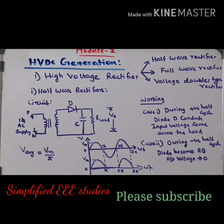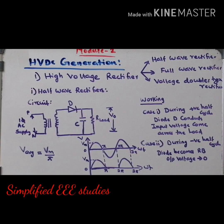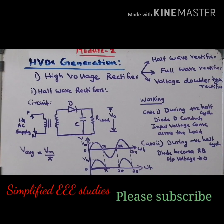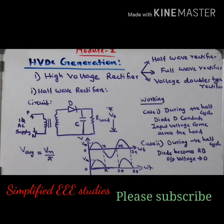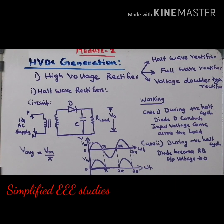Hello everyone. Welcome back to my YouTube channel. In the last session, I explained different methods of production of high voltage DC, high voltage AC and impulse voltage. Today, I will be explaining how to produce high voltage DC by using different methods. The first method I am going to concentrate on is the high voltage rectifier. There are different varieties of high voltage rectifier: half-wave rectifier, full-wave rectifier and voltage doubler circuits. We will be inspecting them individually.